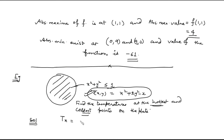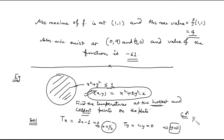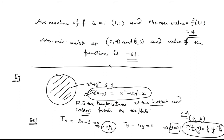We find the partial derivatives of T with respect to x and y and set them to zero. From Tx = 2x − 1 = 0, we get x = 1/2, and from Ty = 4y = 0, we get y = 0. So the critical point is (1/2, 0). The temperature at this point is (1/2)² + 0 − 1/2 = 1/4 − 1/2 = −1/4.